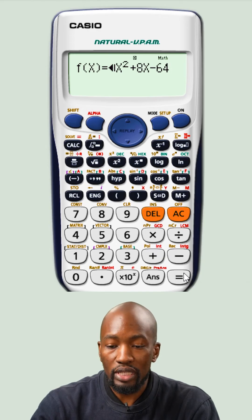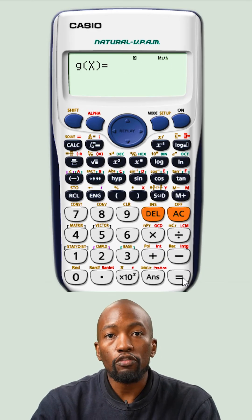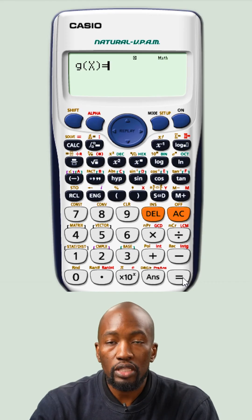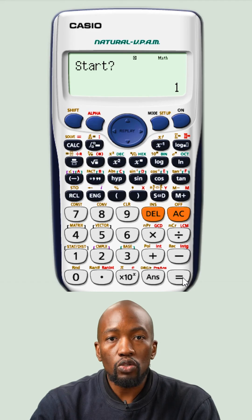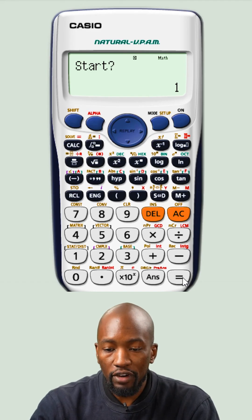Then what we need to do next is press equals. If your calculator prompts you for g(x), you just need to press equals. Now when it asks you for start, make sure your start is negative 5.